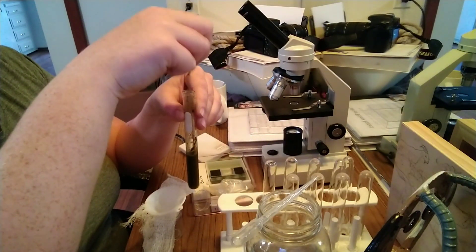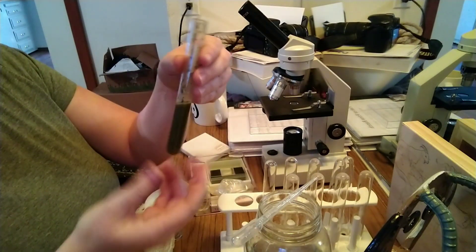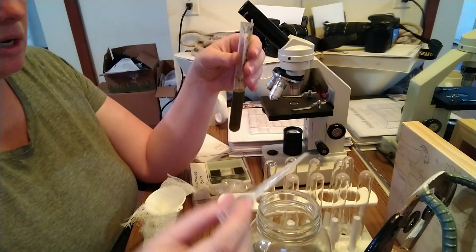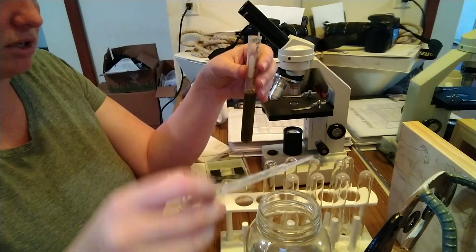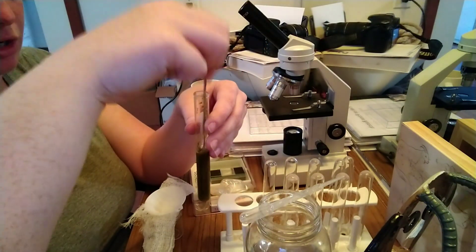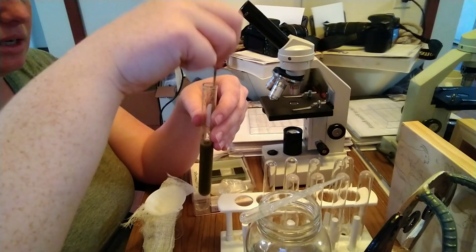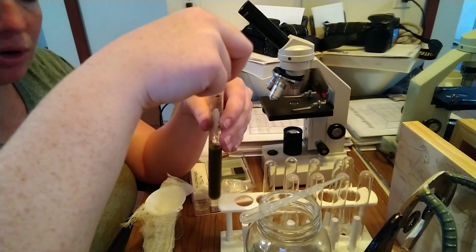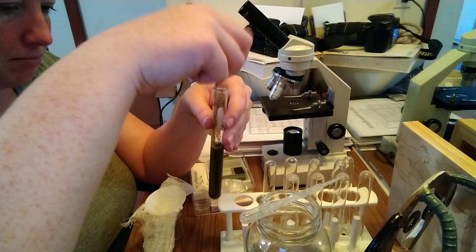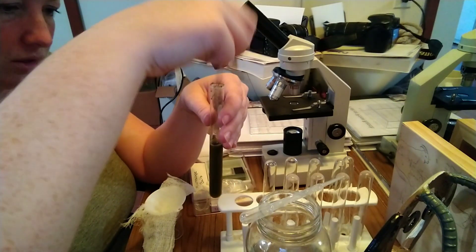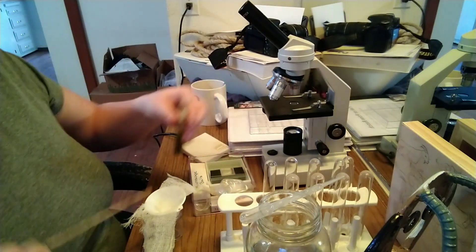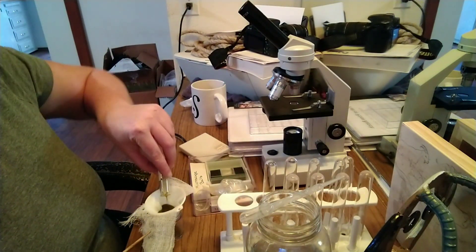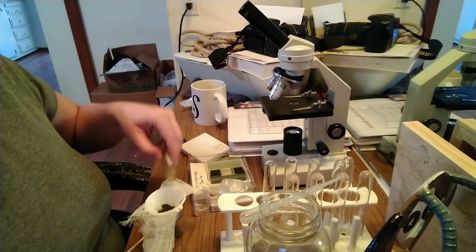So I'm going to stir this up just one more time and depending on how much manure you have in there, I'm going to add a little bit more of the solution. I know there's like a certain amount that you're supposed to add. I've never had any issues finding the eggs doing it this way, just going by eye.